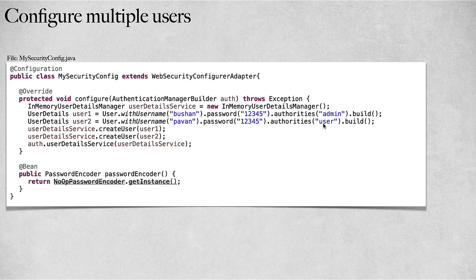We also need to provide a password encoder. If we do not configure a password encoder, Spring Security will throw an exception. We are going to create a bean of PasswordEncoder — we'll use NoOpPasswordEncoder and call the getInstance method, meaning we are not using any encoding technique.